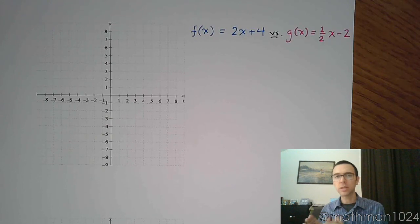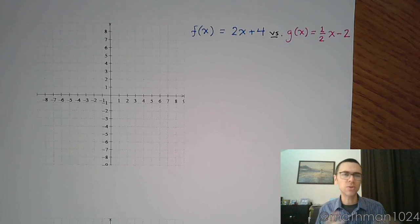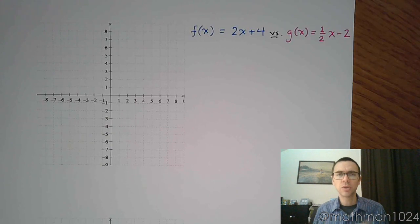In this video we want to take a look at those last two functions we've talked about that we showed were inverses of each other, and we want to see what they look like in terms of their graphs. How do the graphs compare? Are there things that are similar? Are there things that are different? Is there a pattern that we can notice between a function and its inverse?